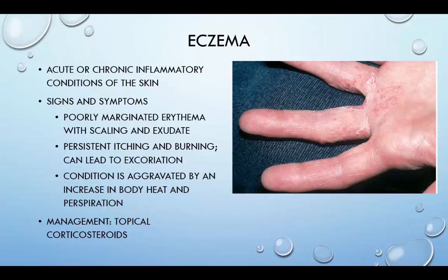Eczema can either be acute or chronic and is an inflammatory condition of the skin. It can have an onset in the first two years of life, and a history of asthma or hay fever may be reported. Eczema can take a physical and emotional toll on individuals. Signs and symptoms include poorly marginated erythema with scaling and exudate. Persistent itching and burning can lead to excoriation, and this condition can be aggravated by an increase in body heat and perspiration. Management should include topical corticosteroids, an emollient cream or ointment, bath oils, and moisturizers. Consistent use of steroid cream is essential for it to be effective.